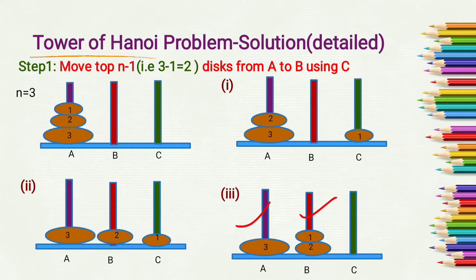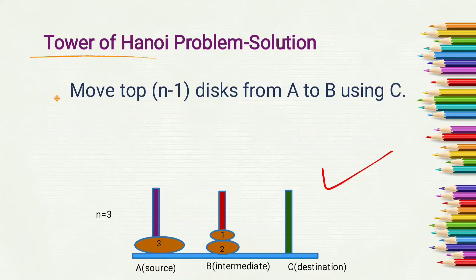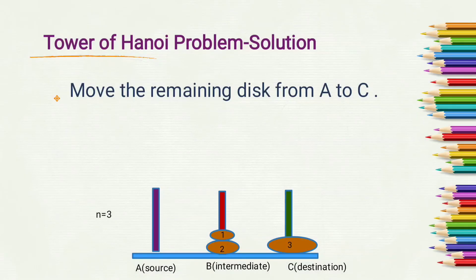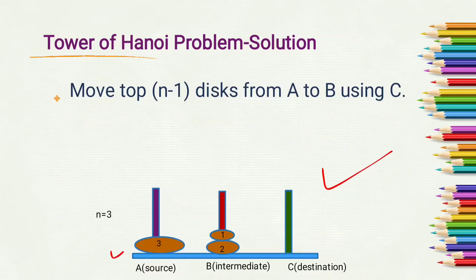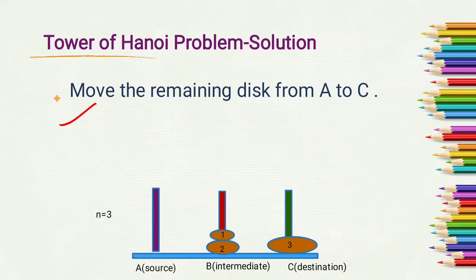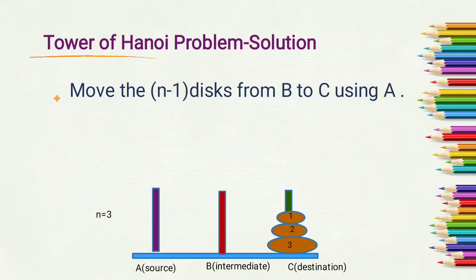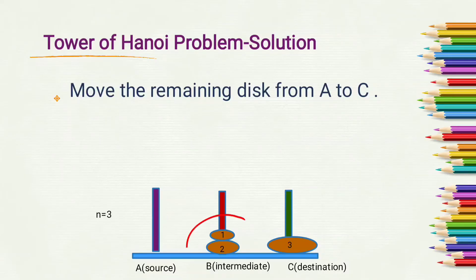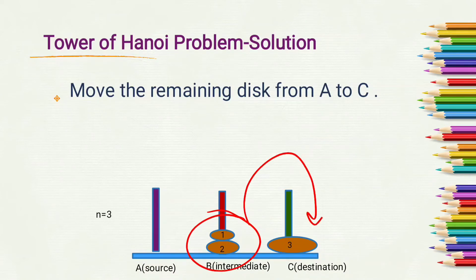Step two: move the remaining disk from A to C — the third disk — so we move disk 3 from A to C. Step three: move the n minus one disks from B to C using A as the intermediate rod. We have to move the two disks from B to C using A.